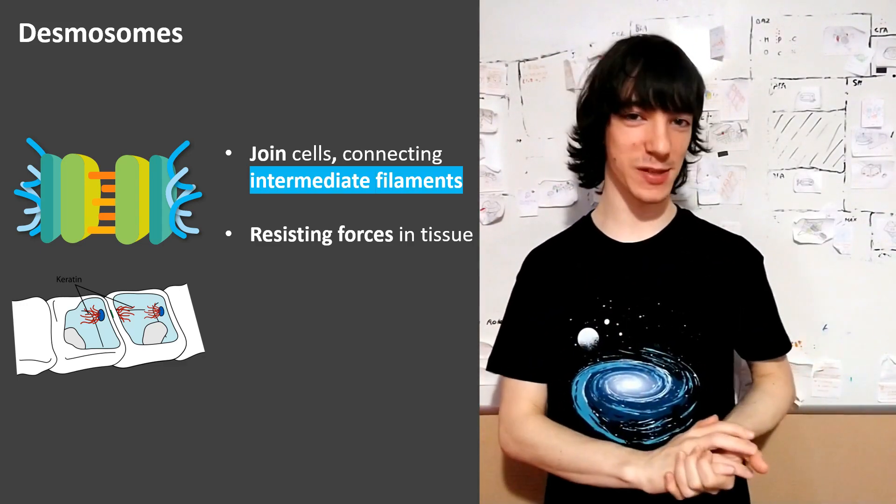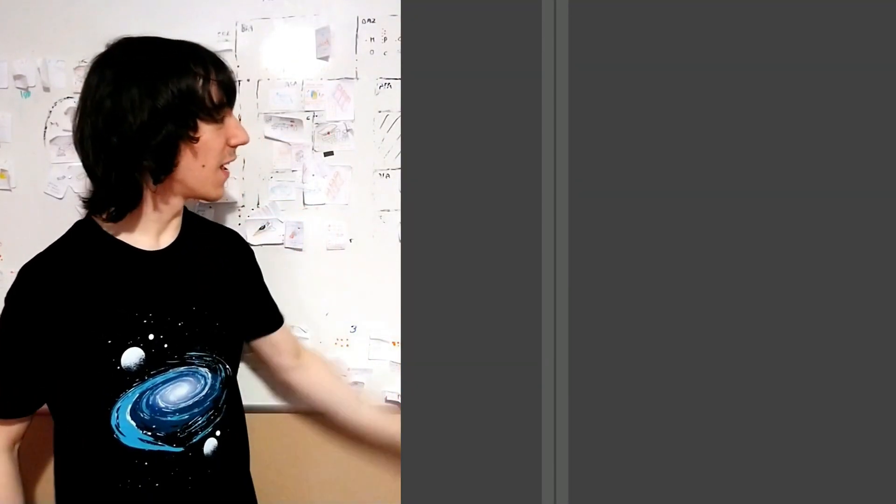So how do you make one desmosome? If you've seen the previous videos, you know how this goes. This is a membrane, and to make that membrane be connected to a neighboring membrane, we need transmembrane proteins.